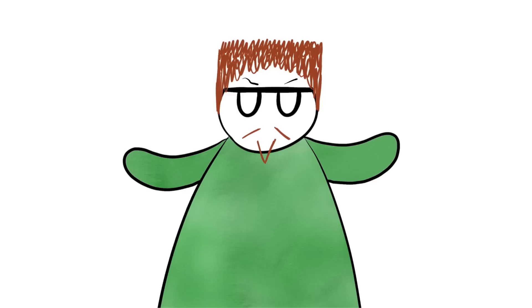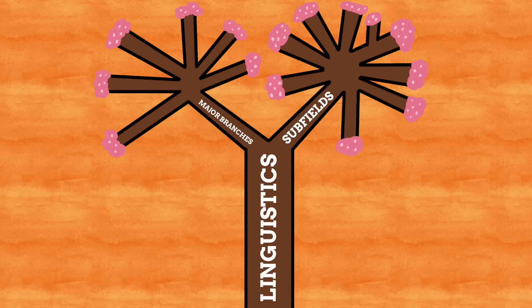To understand the breakdown of the field of linguistics, we need to understand that it breaks down into major branches and subfields. We're going to start by looking at the major branches. These major branches cover the broad strokes of language and are more the building blocks of how languages work as a whole. Of course they can apply to languages found all across the globe too, but work differently in those different languages.